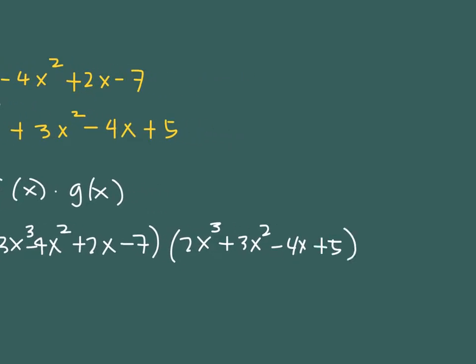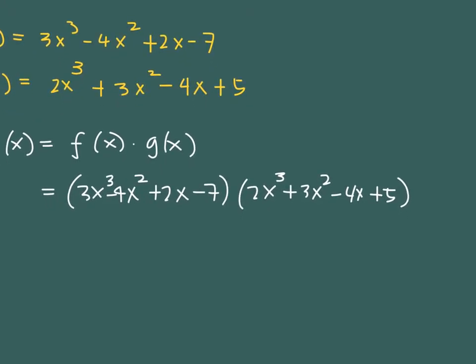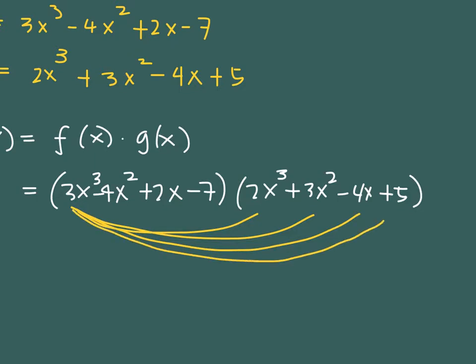As you can see, I always make use of parentheses in order to place the group for each function. The idea is, one of the ways that we can do this is to distribute every term to the other group, which is 2x³ + 3x² - 4x + 5, and obtain the product of each pair, and then we move to the second and then repeat the process.